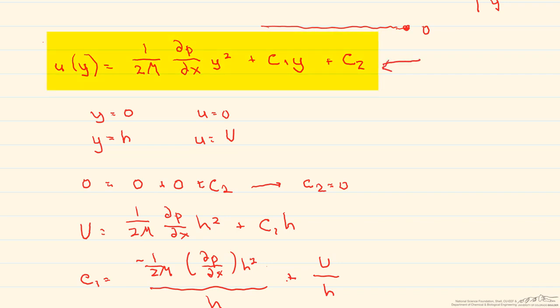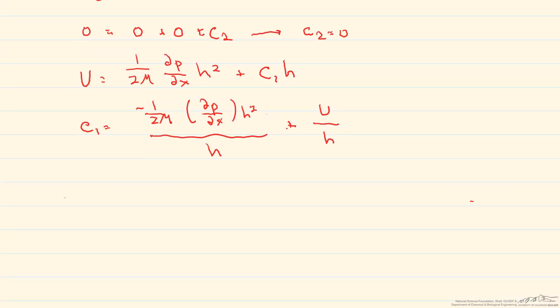Now we go back to our original equation and replace our C₁ with the value we just calculated. That gives us our final velocity profile, u(y), and that's going to equal one over 2μ dp/dx times (y squared minus h times y), plus U times y divided by h. We can apply this at any y to determine the velocity at that point.